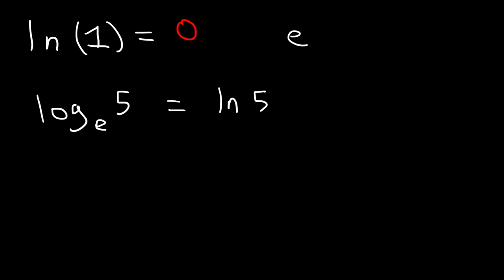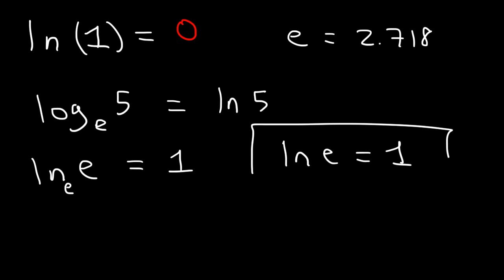And E is a number. It's like 2.718 something. But that's E. So now what is the natural log of E? Because the base is the same as E, ln base E of E is 1. So the natural log of E is always equal to 1. Make sure you know that, by the way.